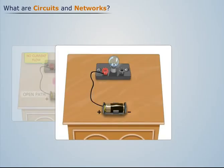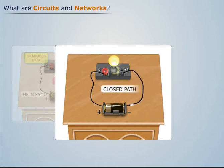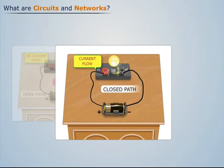Let's connect the other end of the bulb and the negative terminal of the battery to form a closed path. We see that current flows through the bulb and it glows. Thus we can say that this system is a circuit.